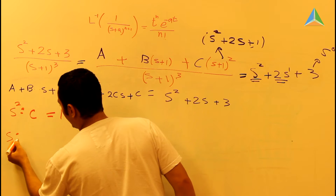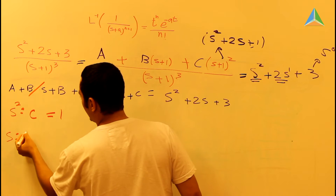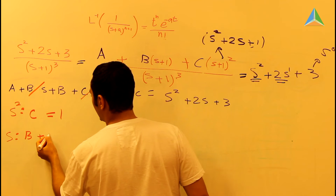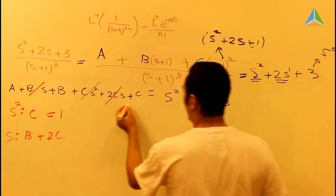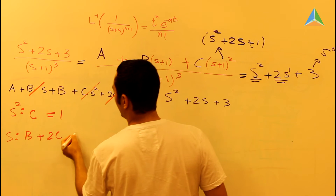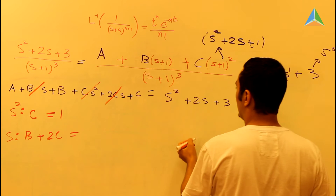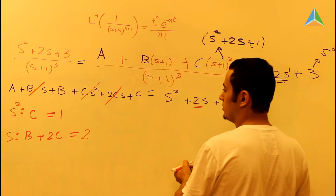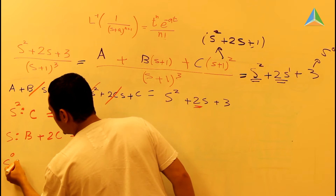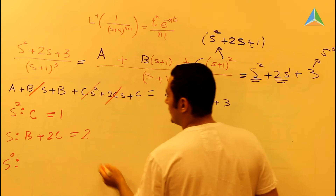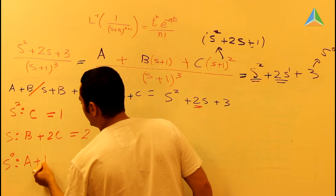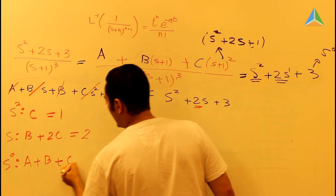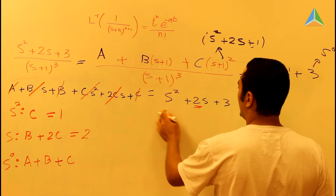The second equation is in terms of S. We see B, and we see 2C. There is nothing else, so this is equal to 2. That means B plus 2C equals 2.